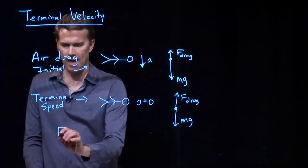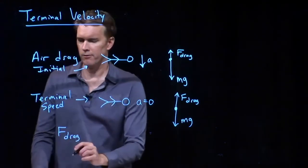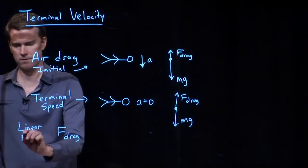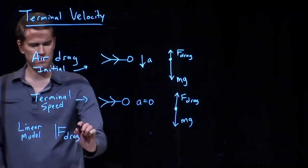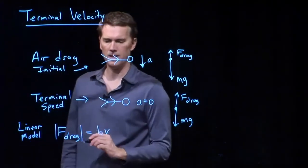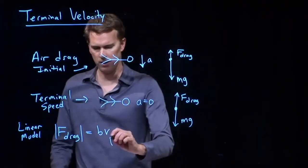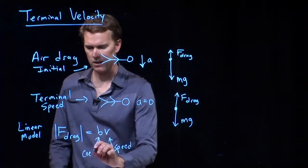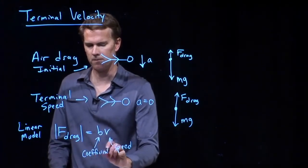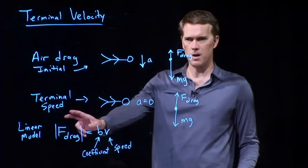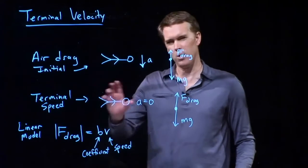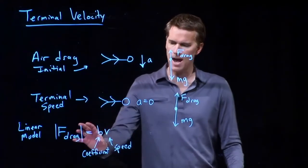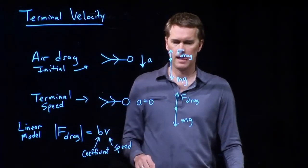All right. What is F drag? F drag, for the linear model, has a magnitude equal to B times V. What does this mean? This is your speed. This is a drag coefficient. Later on, we're going to look at the non-linear model, where it goes like V squared, and we'll have some other parameters in there. But this is a fine place to start, the linear model. Drag increases with your speed.